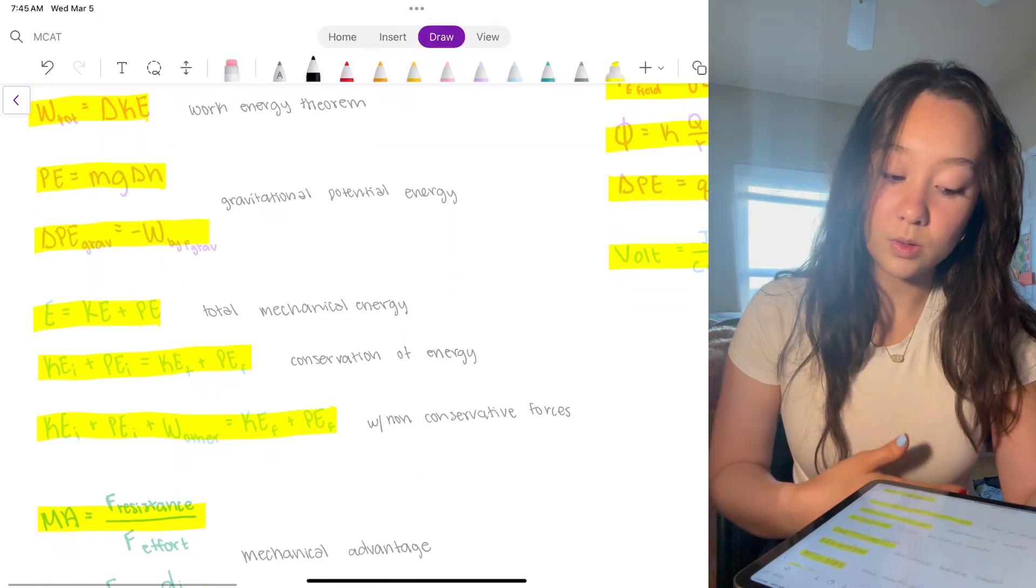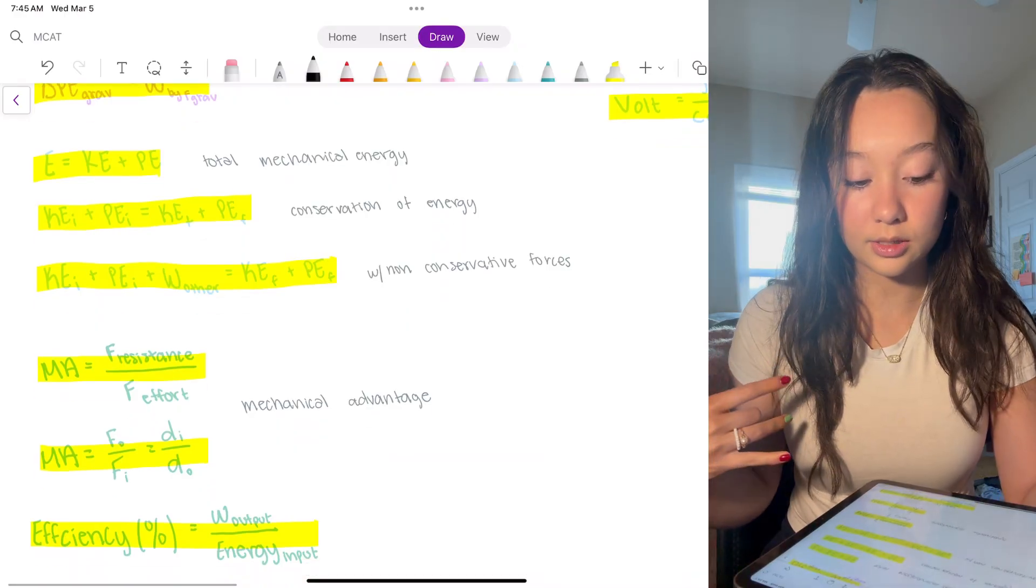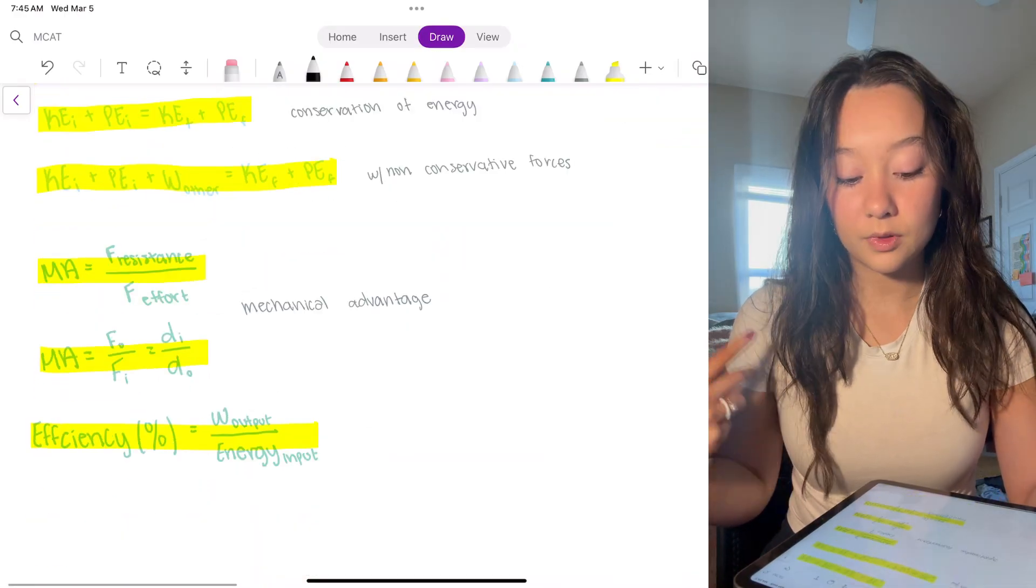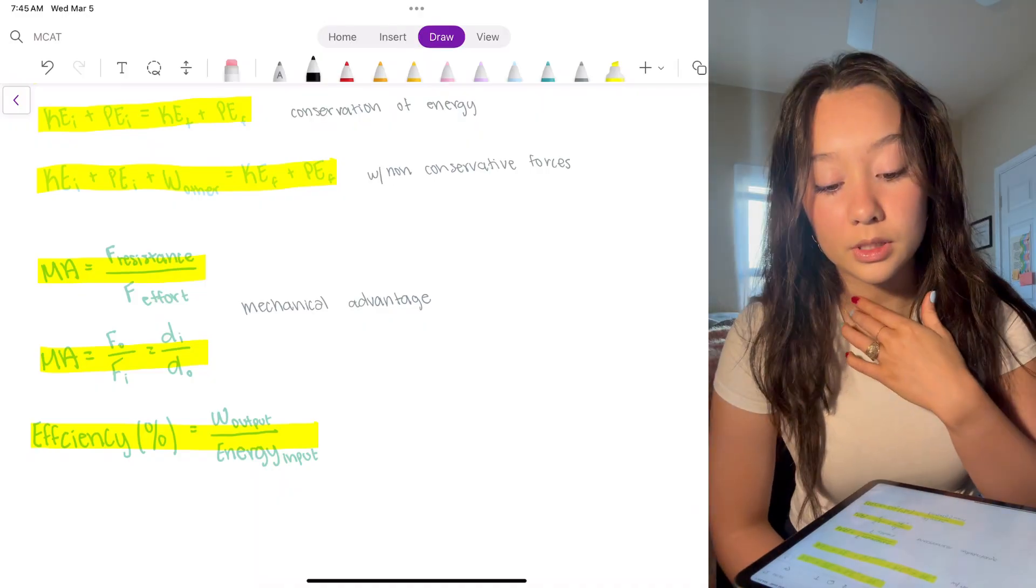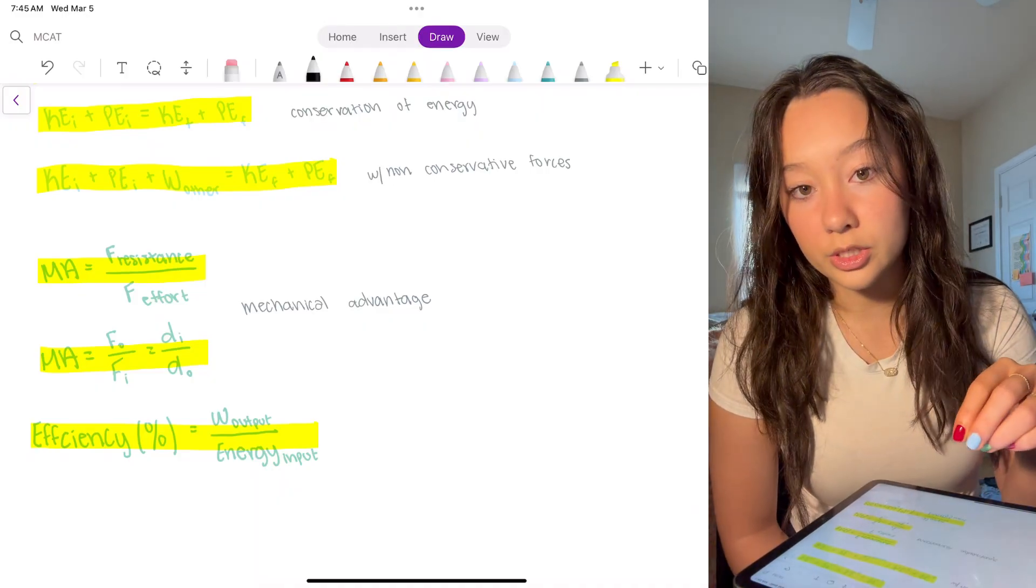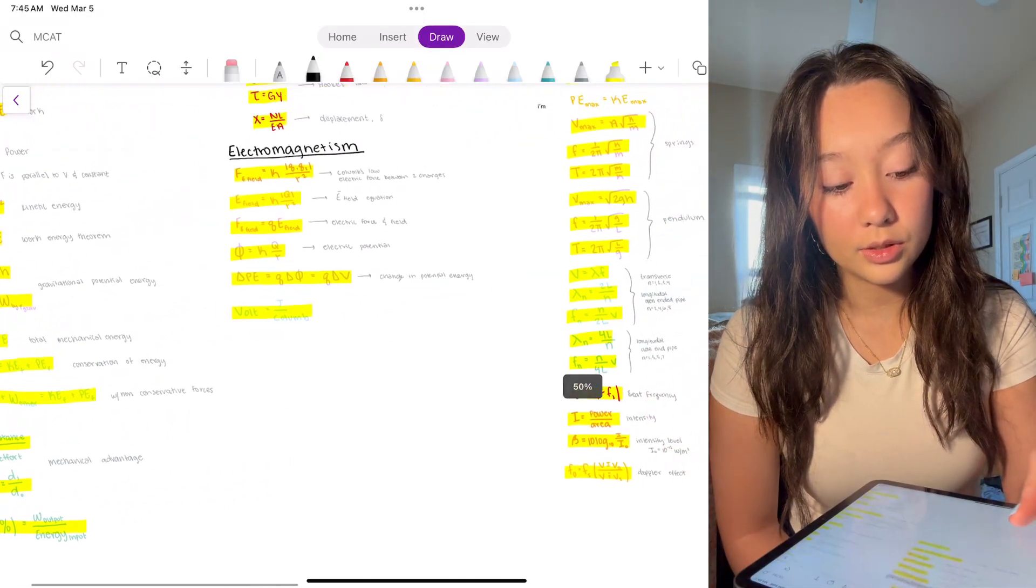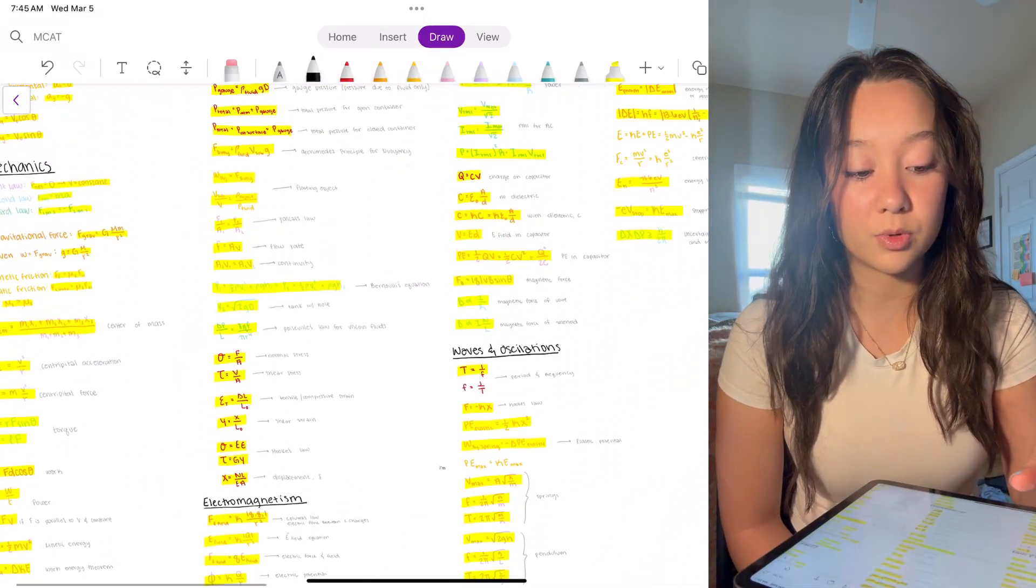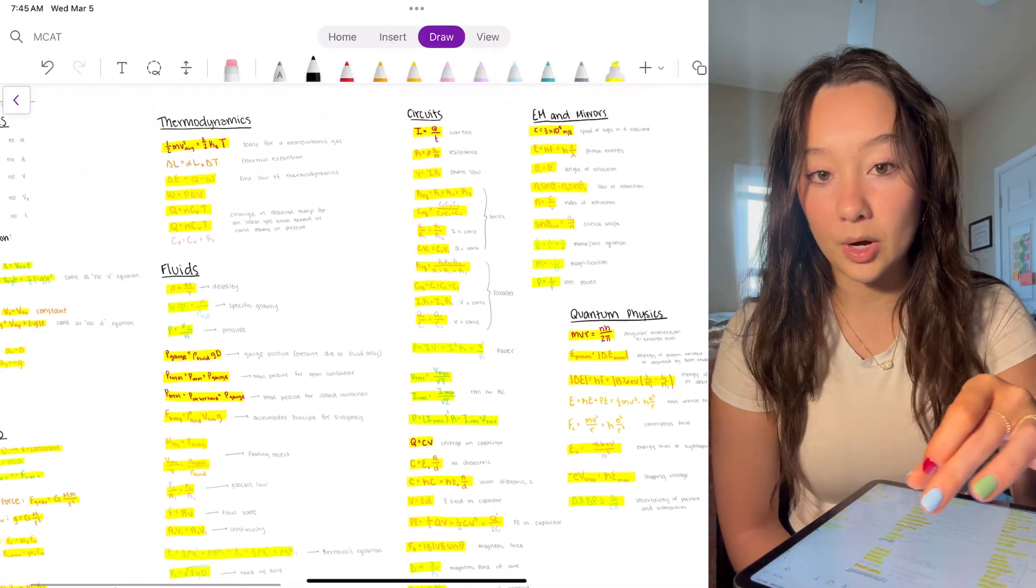Conservation of energy, total mechanical energy, work with conservative forces. I don't think these are as high yield, efficiency, work, mechanical advantage. Normally a lot of these kind of nitty-gritty equations down here they'll give you in the passage, so not as high yield. But if you've taken physics classes before, these might just click and be memorized easy.